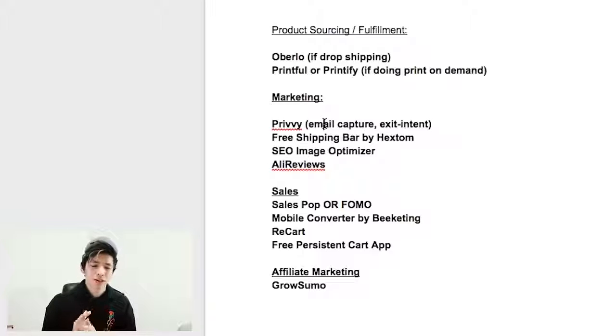Next, download the free shipping bar app. With my stores I always offer free shipping everywhere — I just cover the shipping cost in the product price. So customers think they're getting free shipping, but you're just including it in the purchase price. The app advertises free shipping and makes potential customers aware they don't have to pay extra at checkout. After that, get the Easy SEO Image Optimizer — optimizing your images for search engines will eventually lead to a trickle of organic traffic you don't have to pay for.